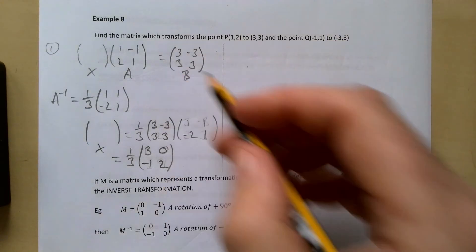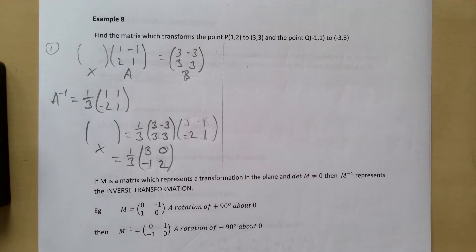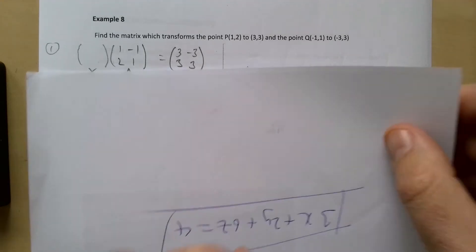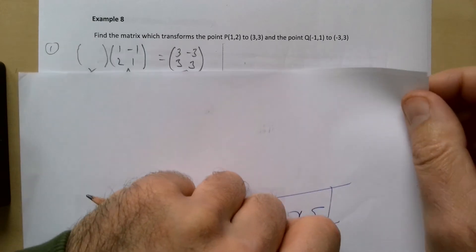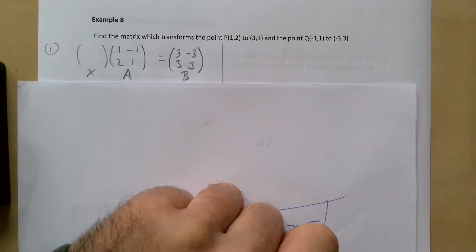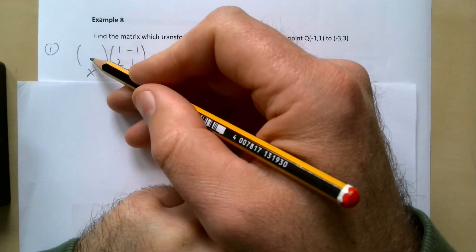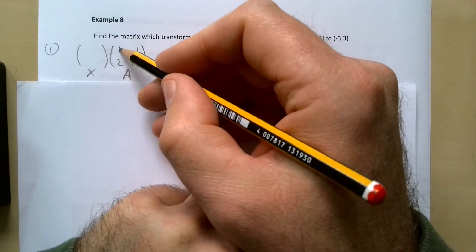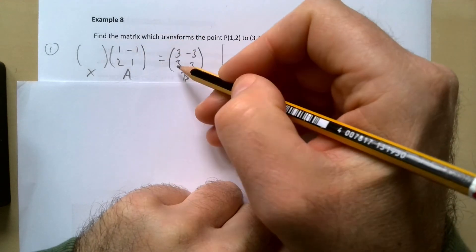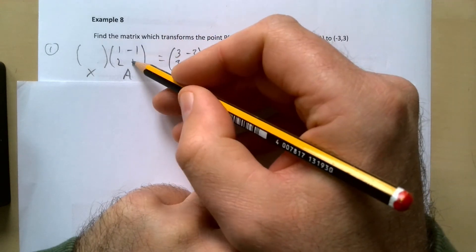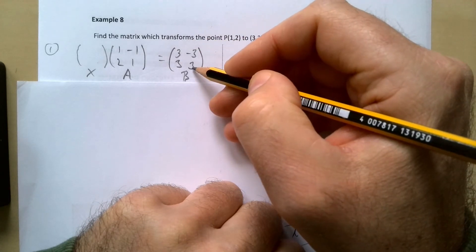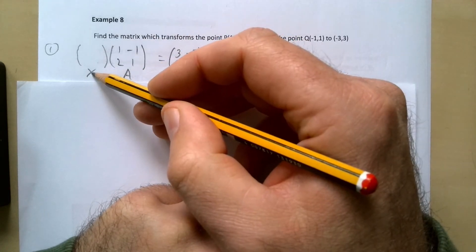There's two different ways of doing this so I'm going to do both of them. So here's the idea: there's some matrix that we're looking for and if you put the point (1,2) into it you get (3,3) and if you put in (-1,1) into it we get (-3,3). This matrix I've called X, we've called this one A and this one B.